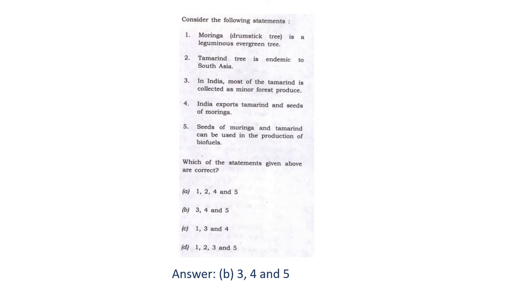Now let's see statement 4. As we have discussed, India is the largest producer and exporter of Moringa and Tamarind seeds. This statement is also correct. We have also already discussed the properties of Moringa and Tamarind seeds as biofuel contributors, so statement 5 is also correct.